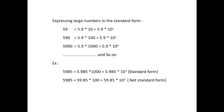Next, expressing large numbers in the standard form. We can write 59 equal to 5.9 into 10, equal to 5.9 into 10 to the power 1. 590 equal to 5.9 into 100, equal to 5.9 into 10 to the power 2. 5900 equal to 5.9 into 1000, equal to 5.9 into 10 to the power 3, and so on. Any number can be expressed as a decimal number between 1.0 and 10.0, including 1.0, multiplied by a power of 10. Such a form of a number is called the standard form.